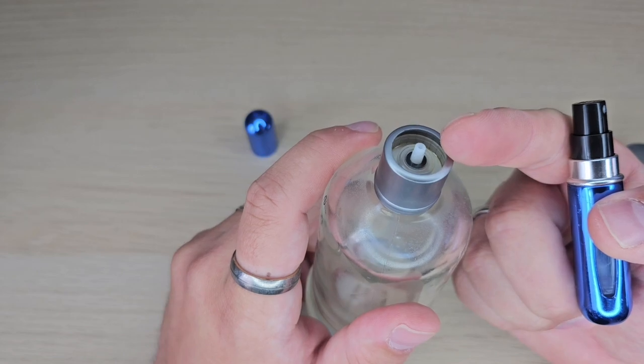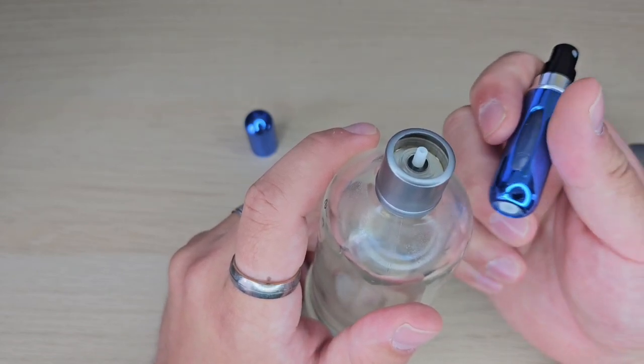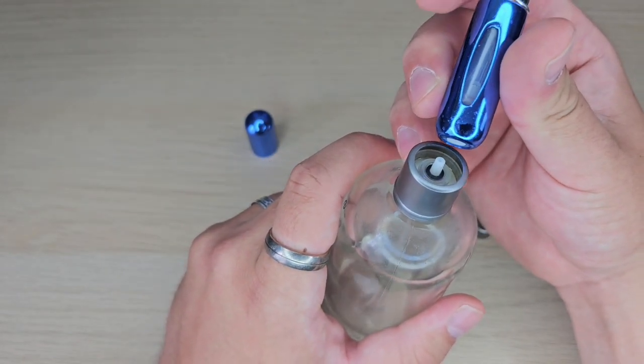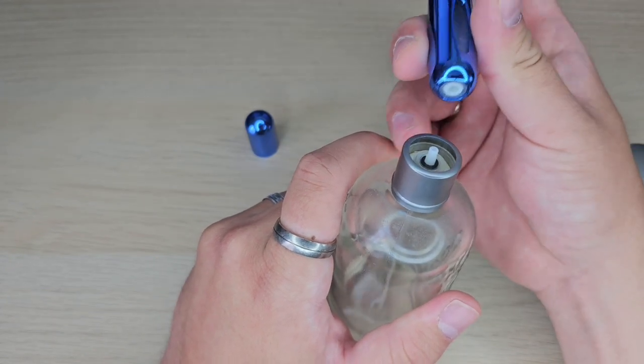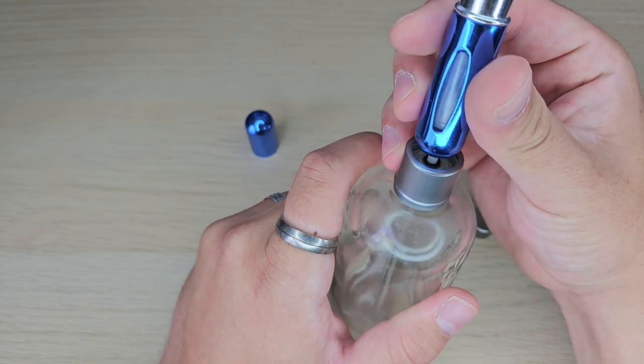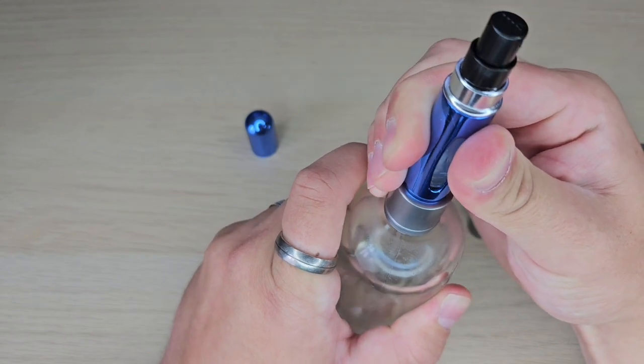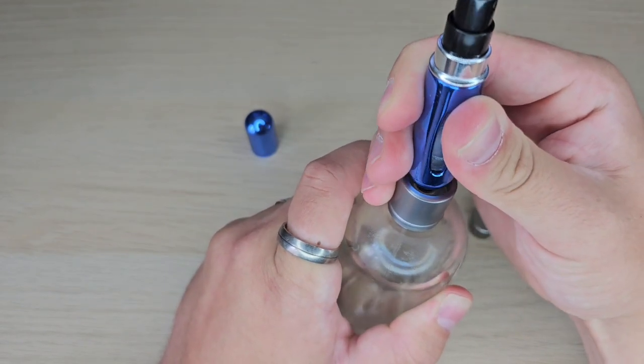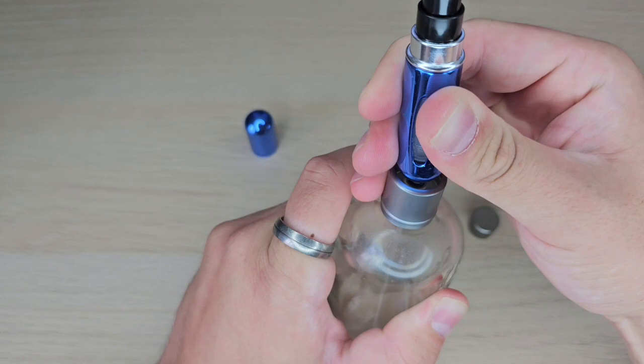If it is flat you cannot fill this atomizer. So what you need to do is to align the bottom of the atomizer with this little stem, make sure it fits nice and you just push it down. And that's it, we're already filling the atomizer.